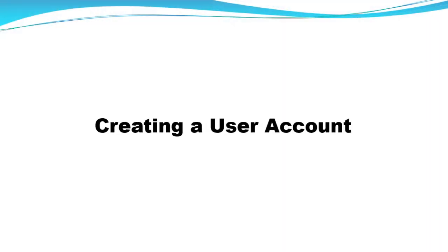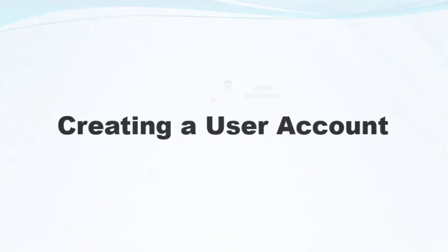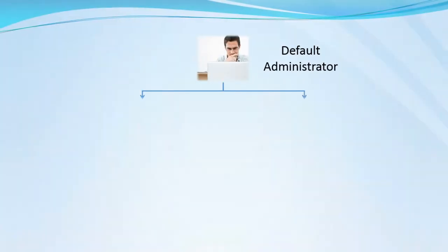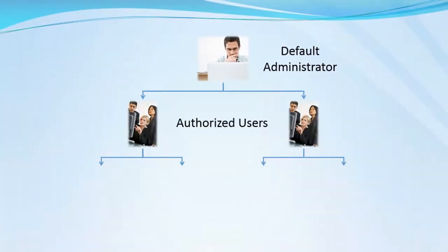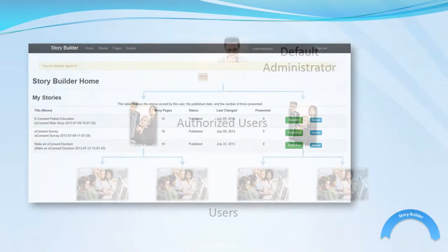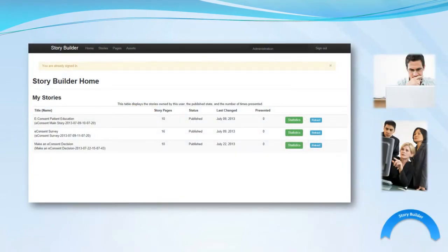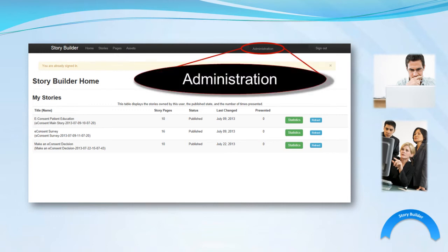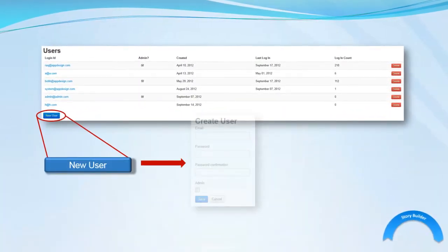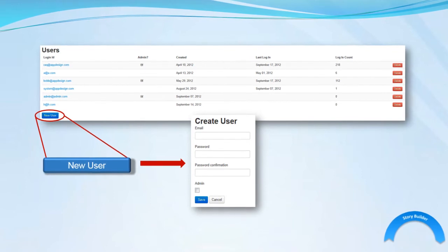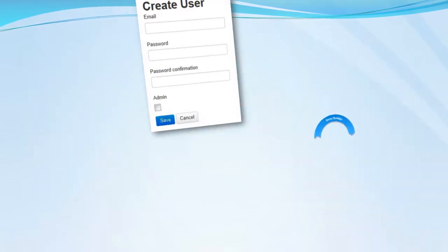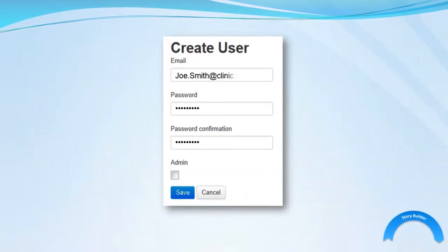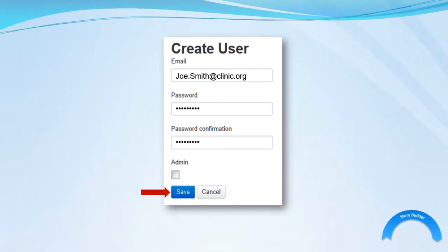Now let's focus on creating a user account. The default administrator can create authorized users who in turn can create more users. The administrator and authorized users create new users by selecting the Administration link at the top of the Home page menu bar. Select New User within the Users dashboard to open the Create User form. Fill out and save the Create User form to create a new user account.